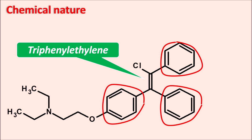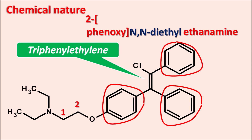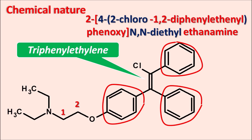For the IUPAC name of clomiphene, the principal functional group is amine, giving the base name 'ethanamine.' Two ethyl side chains are on the nitrogen, making it N,N-diethyl. At the second position there is a phenoxy group (2-phenoxy), with a chloro-substituted ethylene bridge at the fourth position and phenyl groups at positions one and two. The full IUPAC name is: N,N-diethyl-2-[4-(2-chloro-1,2-diphenyl ethenyl)phenoxy]ethanamine.